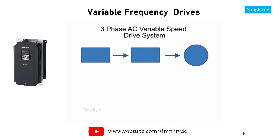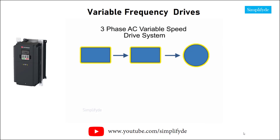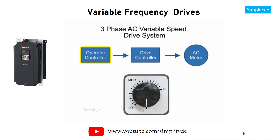This block diagram illustration depicts a typical three-phase AC variable speed drive system. It has three main components: an operator control, a drive controller, and an AC motor. An operator control device provides a means to start and stop the motor and adjust the operating speed.